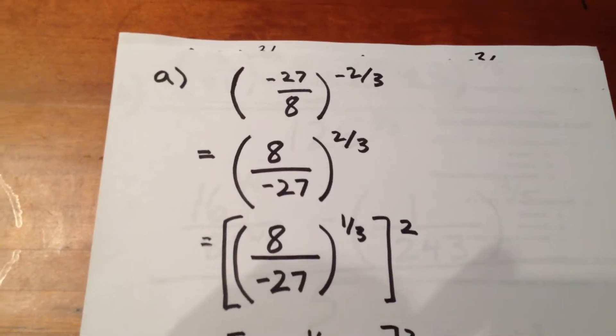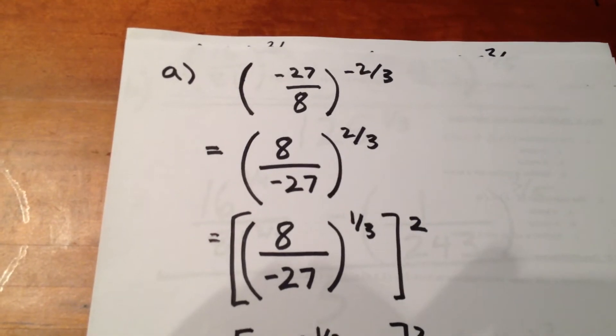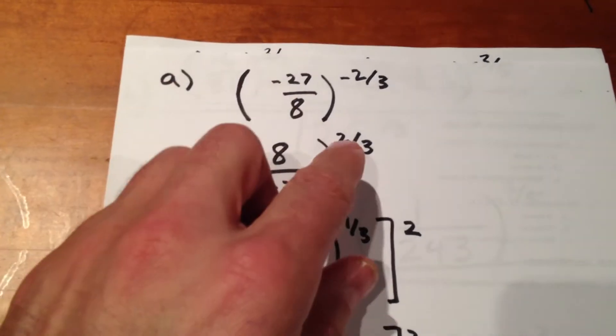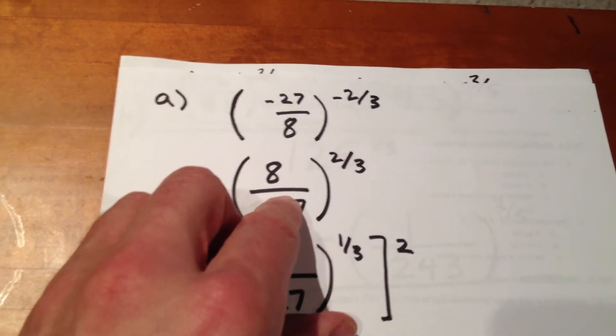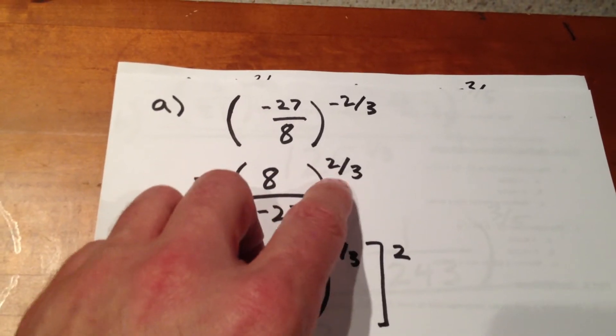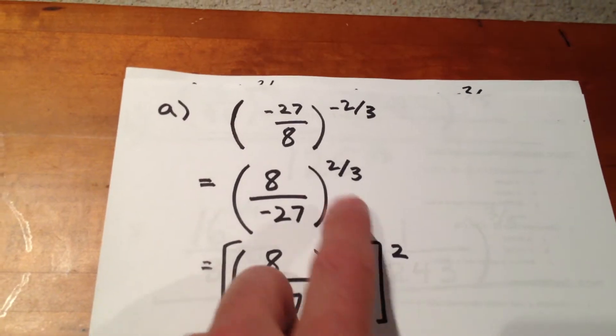What we can then do is figure out the third root of the base. Exponent of two-thirds means we're going to figure out the third root of the base, and then square our result. A third times two is two-thirds.